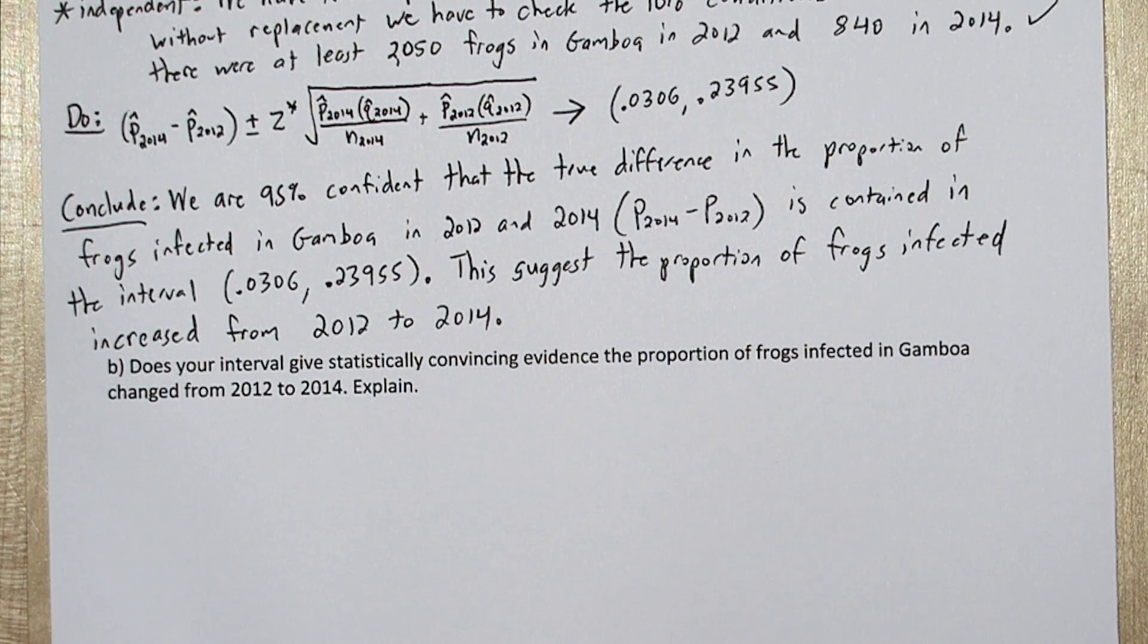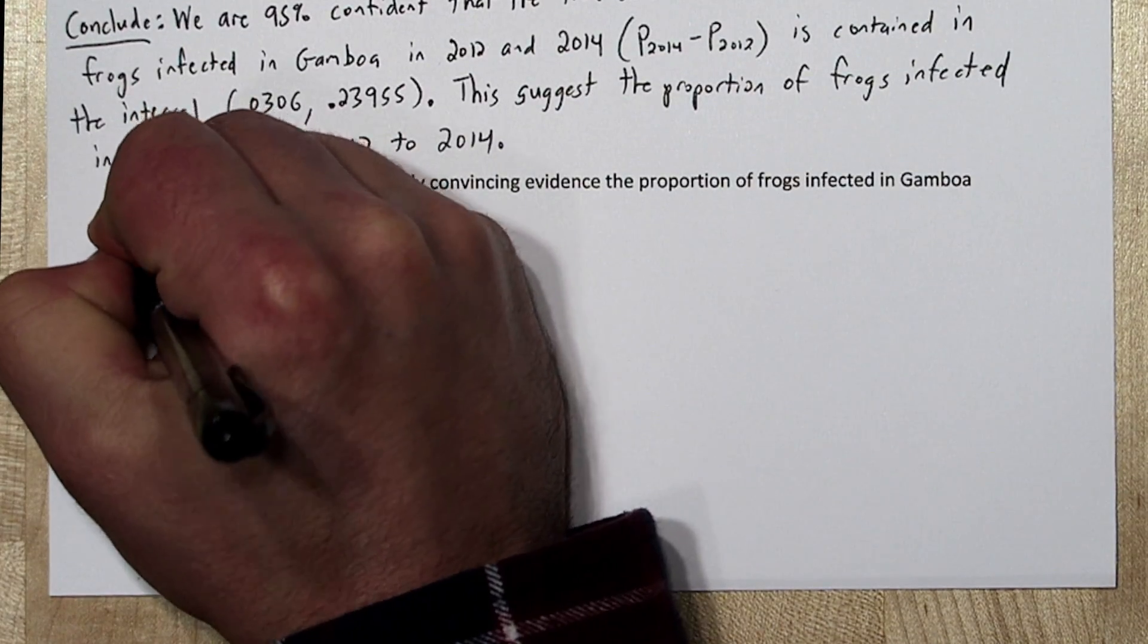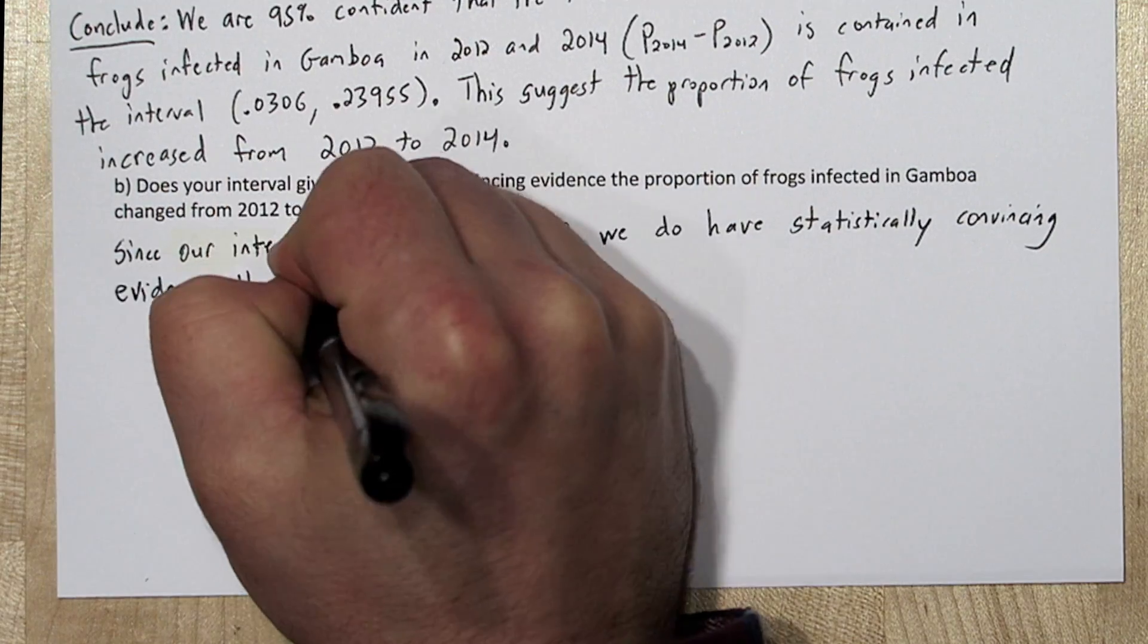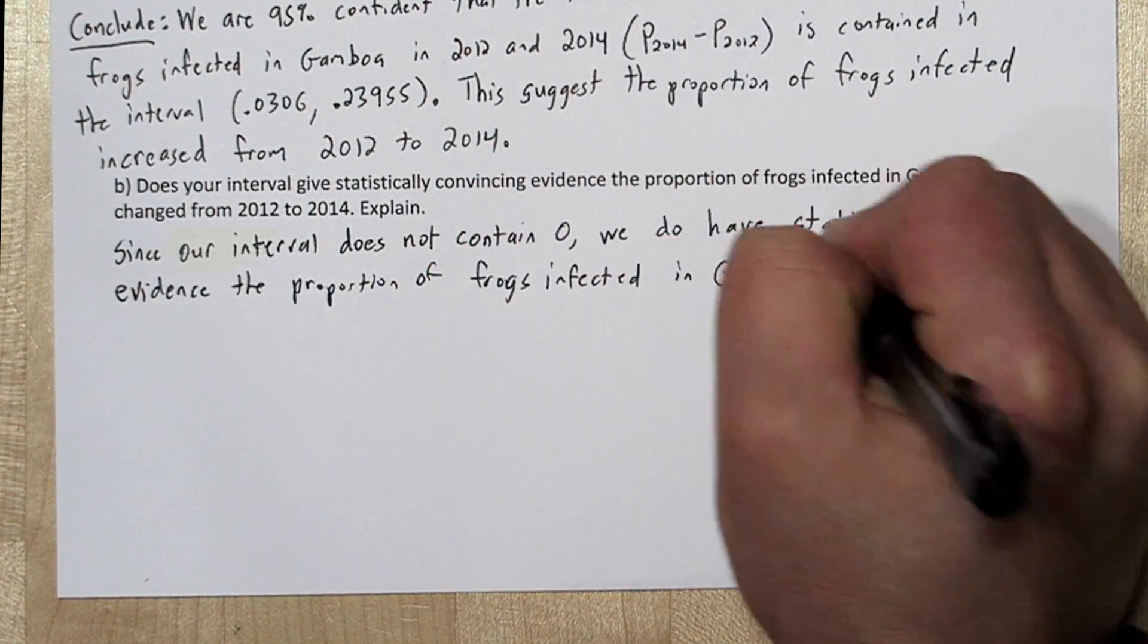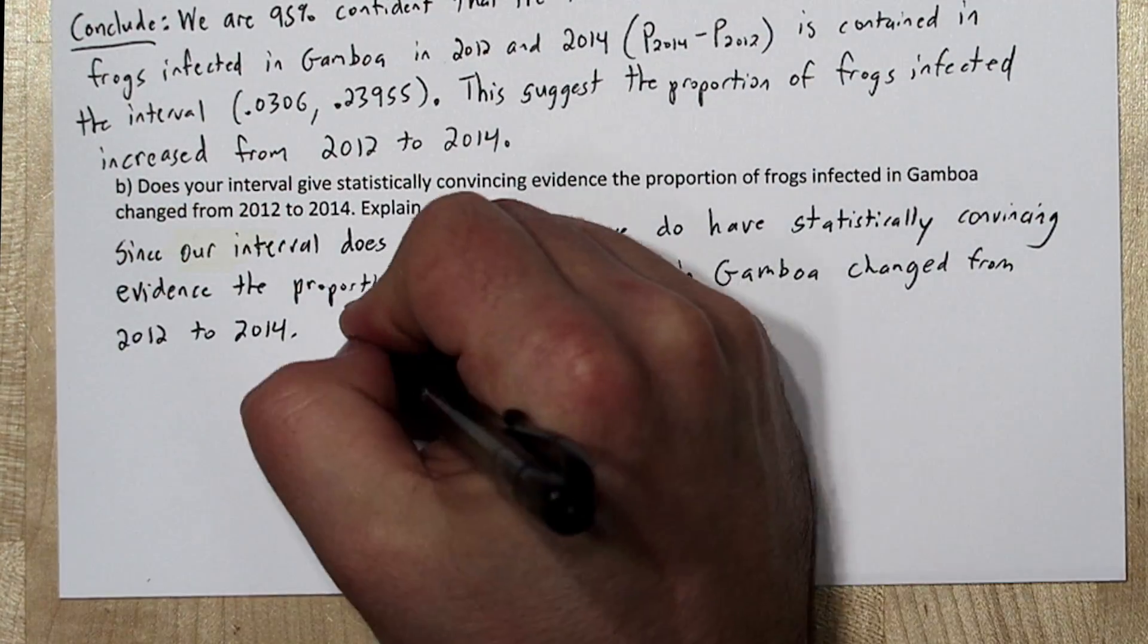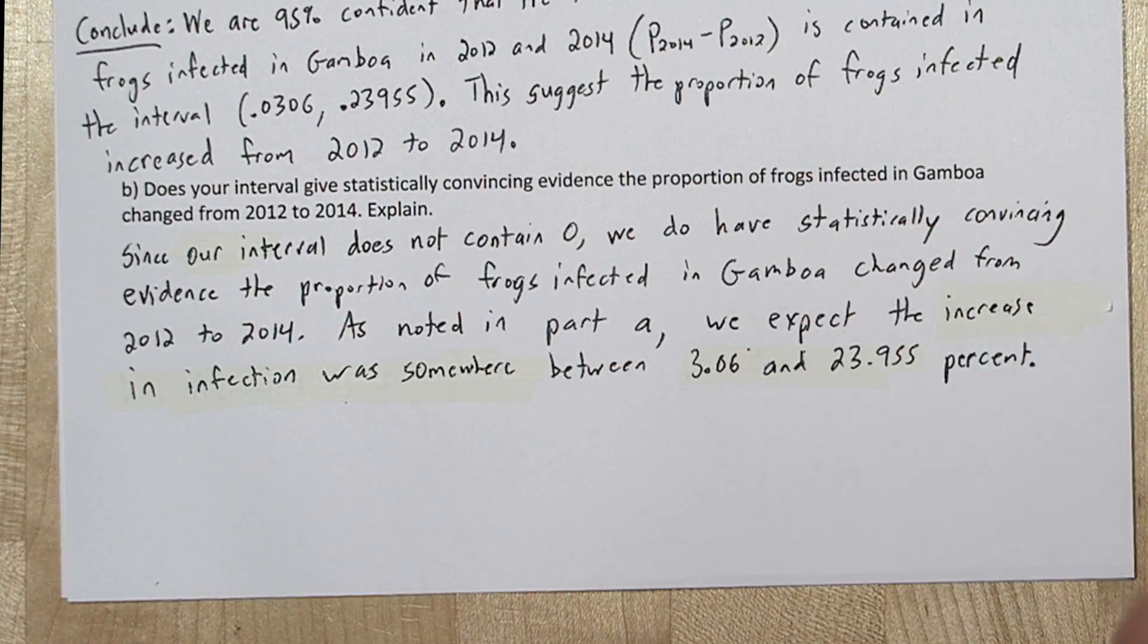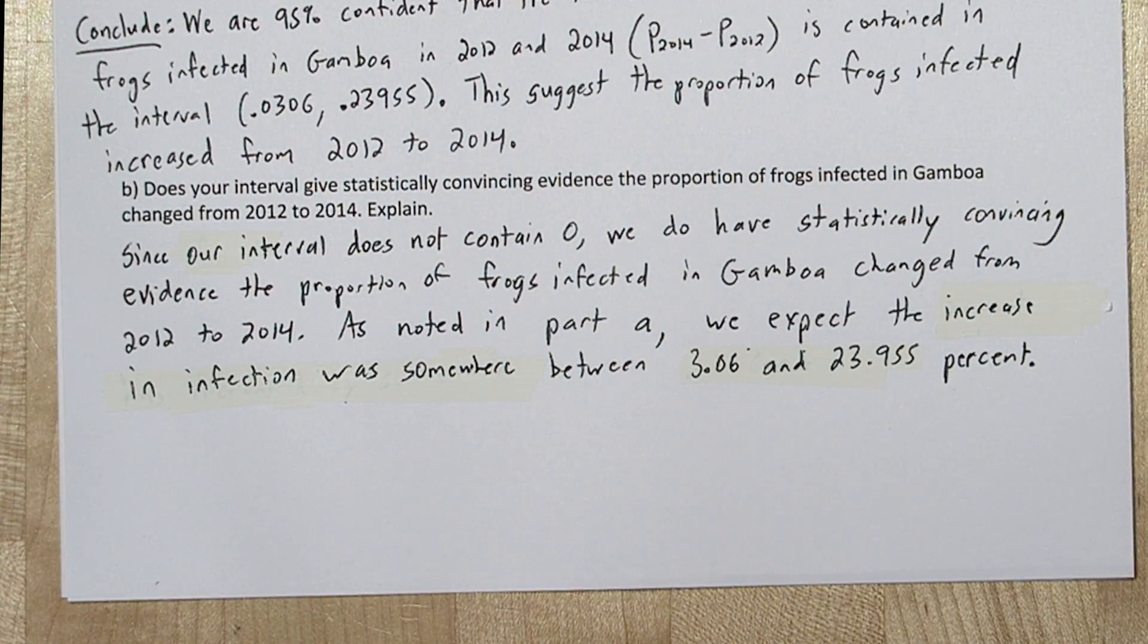Our interval is all positive and does not contain zero, so we do have statistically convincing evidence the proportion of frogs infected in Gamboa changed from 2012 to 2014. As we saw in Part A, we expect the increase in infection was somewhere between 3.06% and 23.955%, our confidence interval.